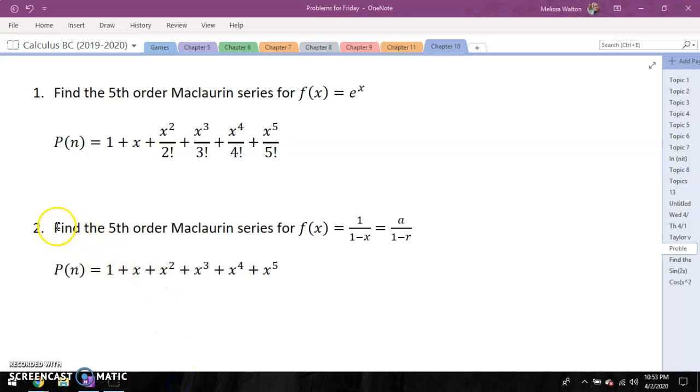Now, the fifth order Maclaurin series for f(x) equals 1 over 1 minus x. Well, you should have recognized this as a geometric series. So looking at our geometric series, my first term is 1, I'm repeatedly multiplying by x. There we go: 1, x, x squared, x to the third, x to the fourth, so on and so forth, and you are ready to go. And if you wanted to check your answers by graphing, you would notice every single term you have gets it to be a little bit closer of an approximation.